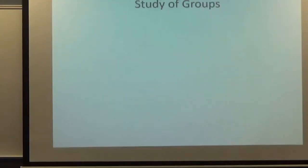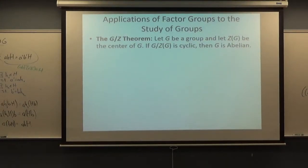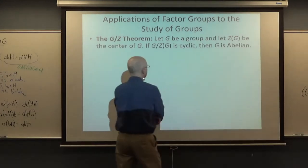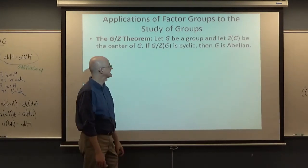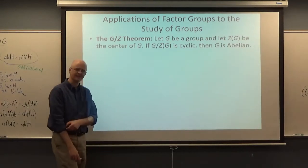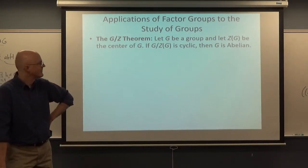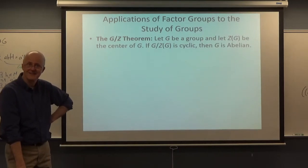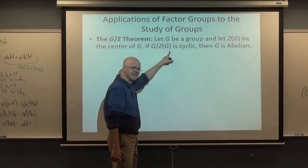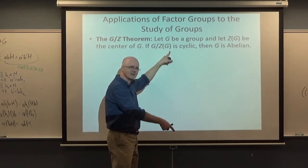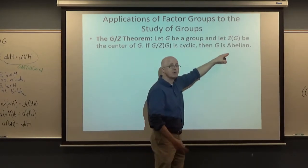Here are a couple of applications of factor groups within group theory itself. There's something called the G/Z theorem. It says if G is a group and the factor group of G by its center is cyclic, then G must in fact be abelian. This is a strange little theorem, because if G is abelian, that would mean the center is actually all of G, making this trivial. So if this factor group happens to be cyclic, then G would be abelian.